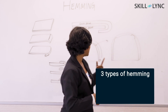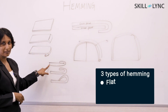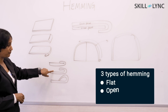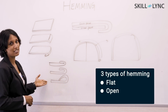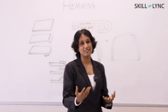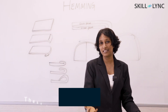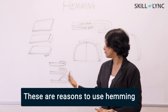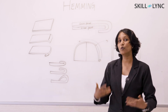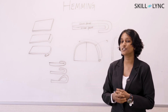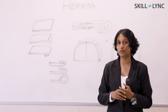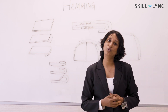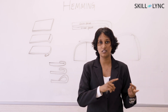What are the different kinds of hemming we have? For example, there is flat hemming, an open hem, and a drop hem. These are just three examples of the types of hemming we have, and there are many more types which we can use in our day-to-day life.